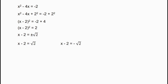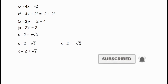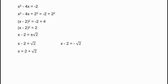So x minus 2 equals root 2, and x minus 2 equals minus root 2. This gives us x equals 2 plus root 2, and x equals 2 minus root 2. Now we have two x values. The two numbers that add to 4 and have product 2 are: 2 plus root 2 and 2 minus root 2.